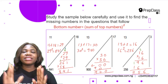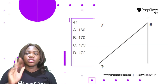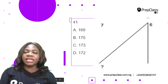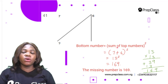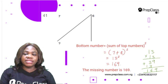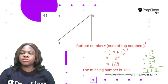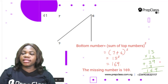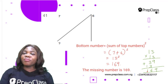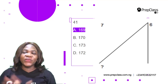For each question, add the two top numbers then square the answer. Question 41: the top numbers are 7 and 6. So 7 plus 6 is 13, then 13 squared. 13 × 13: 3×3=9, 3×1=3, 1×3=3, 1×1=1, giving 169. The bottom number is 169. The correct option is A: 169.